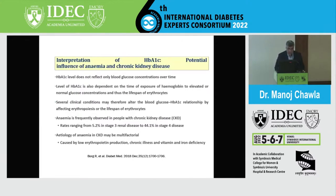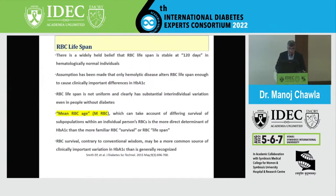In chronic kidney disease, anemia is frequently observed and may be multifactorial in etiology — including low erythropoietin production, chronic illness, and vitamin and iron deficiency. Hence, patients with CKD may have altered HbA1C values.